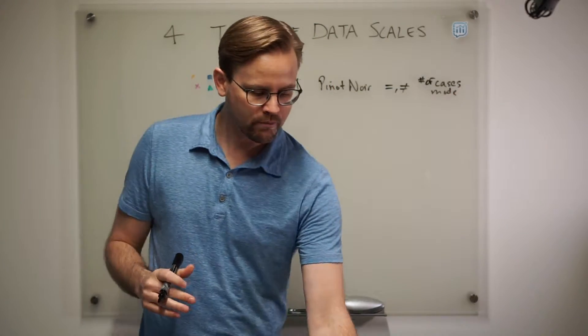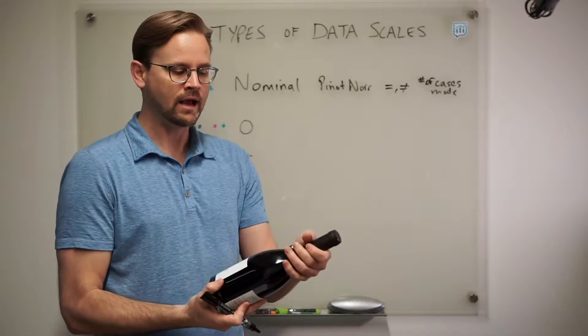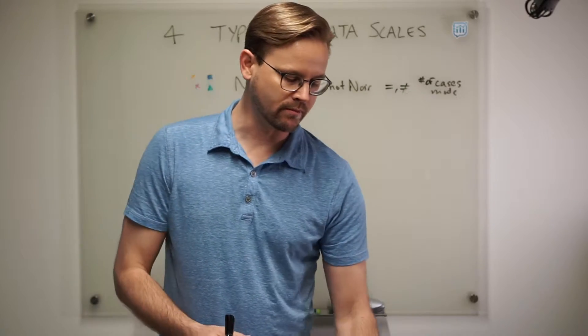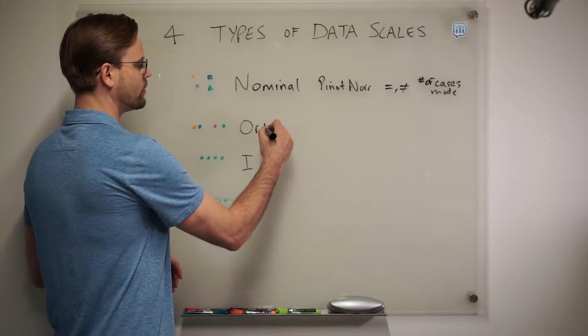Let's say we have a crate of 100 bottles of wine. I can count how many of each type of wine are in it, and the one that occurs most frequently would be the mode. But there's no notion of greater than or less than because that comes in the second one with ordinal.